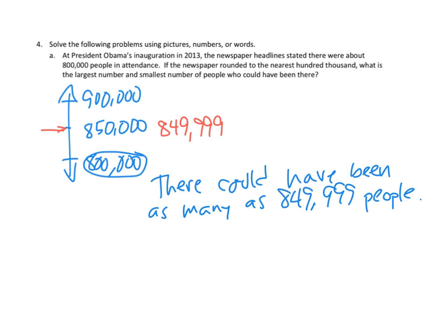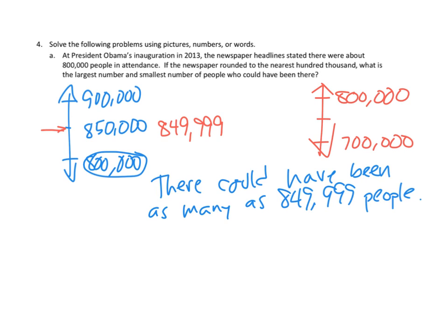I'm going to let you do the other half of that problem, which is to figure out what is the smallest number of people there could have been that they would have rounded up to 800,000. That means we're going to have to do a number line with 800,000 at the top and 700,000 down below, figure out a midpoint, and determine what number around there would they have rounded up to 800,000 people. I'm going to leave you the second half of that problem.